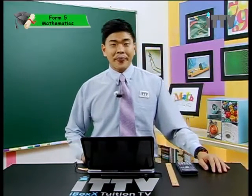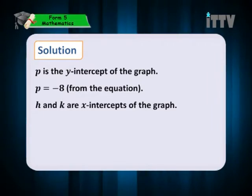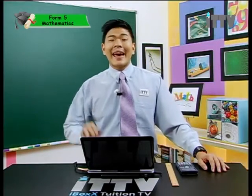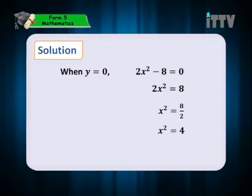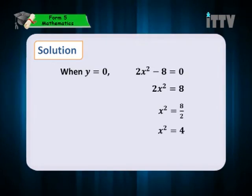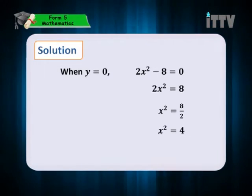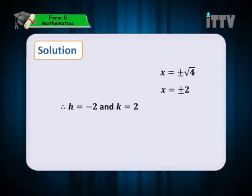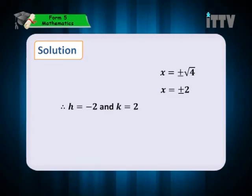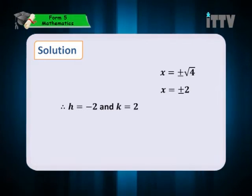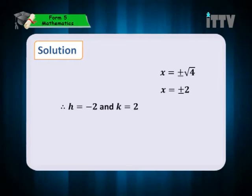Now, what about h and k? h and k are the x-intercepts of the graph. At the x-axis, y is 0. So when y is 0, 2x-square minus 8 equals 0. Then 2x-square equals 8, x-square equals 4, and x equals positive or negative square root of 4, which means x equals positive 2 and negative 2. So h would be negative 2 because h is on the negative part of the x-axis, and k equals 2.